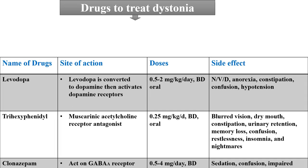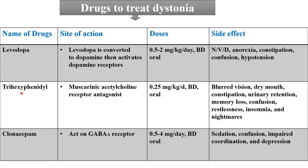Drugs to treat dystonia in athetoid CP are levodopa, trihexyphenidyl, and clonazepam. Levodopa is converted to dopamine and activates dopamine receptors; dose is 0.5–2 mg/kg/day BD orally; side effects include nausea, vomiting, diarrhea, anorexia, constipation, confusion, and hypotension. Trihexyphenidyl is a muscarinic acetylcholine receptor antagonist; dose is 0.25 mg/kg/day BD orally; side effects include blurred vision, dry mouth, constipation, urinary retention, memory loss, confusion, restlessness, insomnia, and nightmares. Clonazepam acts on GABA receptors; dose is 0.5–4 mg/day BD orally; side effects are sedation, confusion, impaired coordination, and depression.